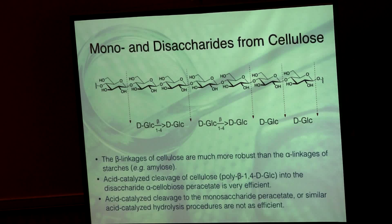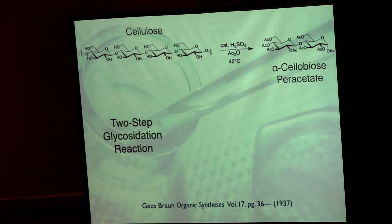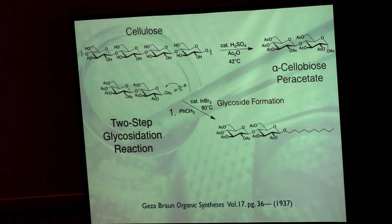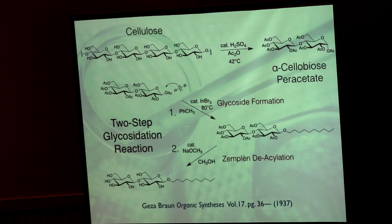Anyway, the point is this is almost like cooking. You just warm up the cellulose in this brew at 42 degrees but not 48, and you let it sit there for three or four days, and you can get very large amounts of the cellobiose.